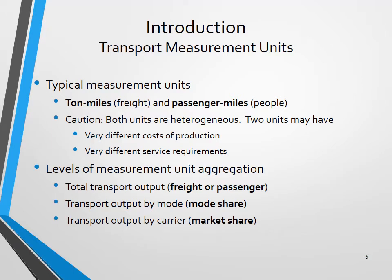Transportation measurement units: we measure transportation by different units. One is ton-mile, the other is passenger-mile. Ton-mile is mostly used for measuring movement of freight — how many tons of freight are moved for how many miles. For example, a 20-ton freight moved for five miles generates 100 ton-miles (20 × 5 = 100). For passenger-miles, if a light rail is moving 100 passengers for five miles, that would be 500 passenger-miles (100 × 5).